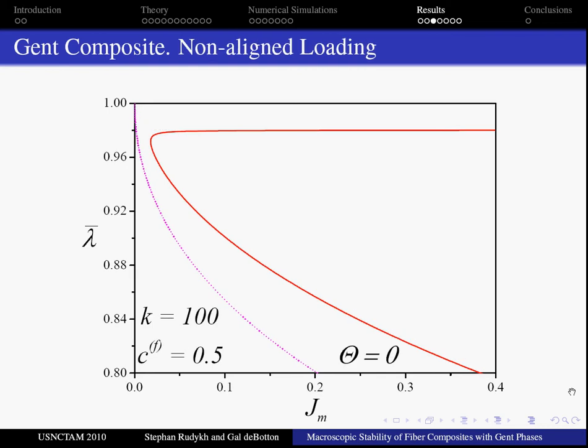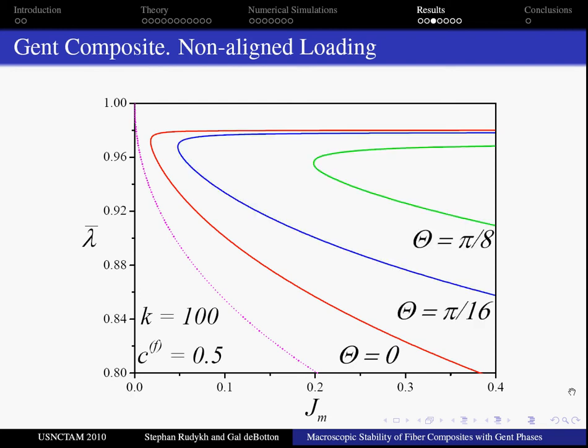Next we provide an example for non-aligned loadings. The example is given for a composite with the same fiber volume fraction CF 0.5 and shear contrast ratio k. The red curve corresponds to loading angle θ 0, the blue curve to 1/16th of pi and the green curve to 1/8th of pi. The corresponding numerical simulation results are denoted by squares, triangles and circles.